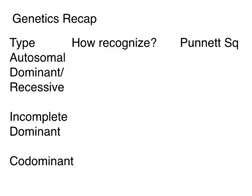In this lesson we're going to take a quick recap of genetics. The reason I like to do this at the very end is because up until now you've been practicing with one type of inheritance at a time, and that's not really how the EOC is going to operate. You're going to get a genetics problem and you just have to recognize the type of inheritance and figure out what the Punnett Square is supposed to look like.